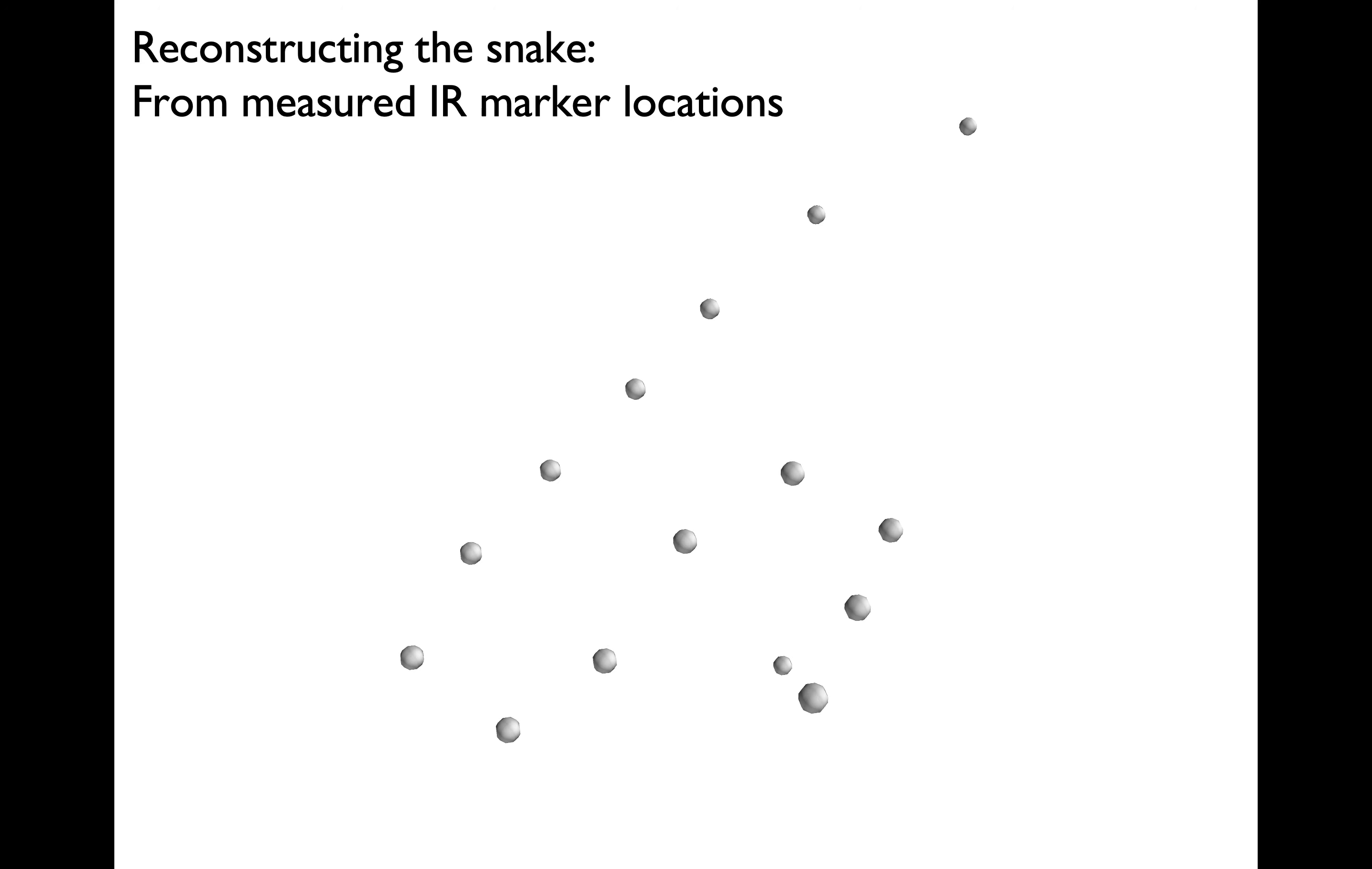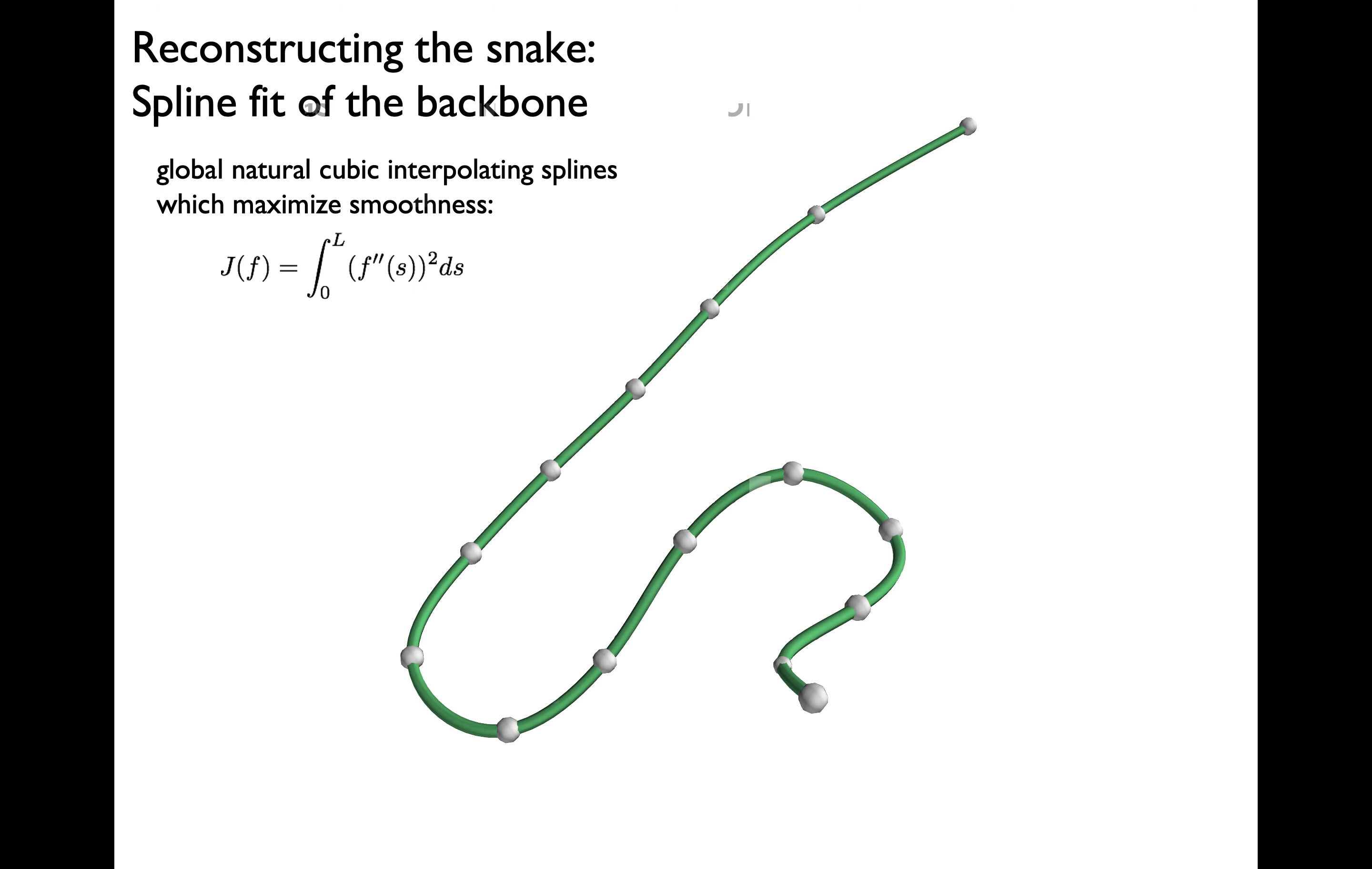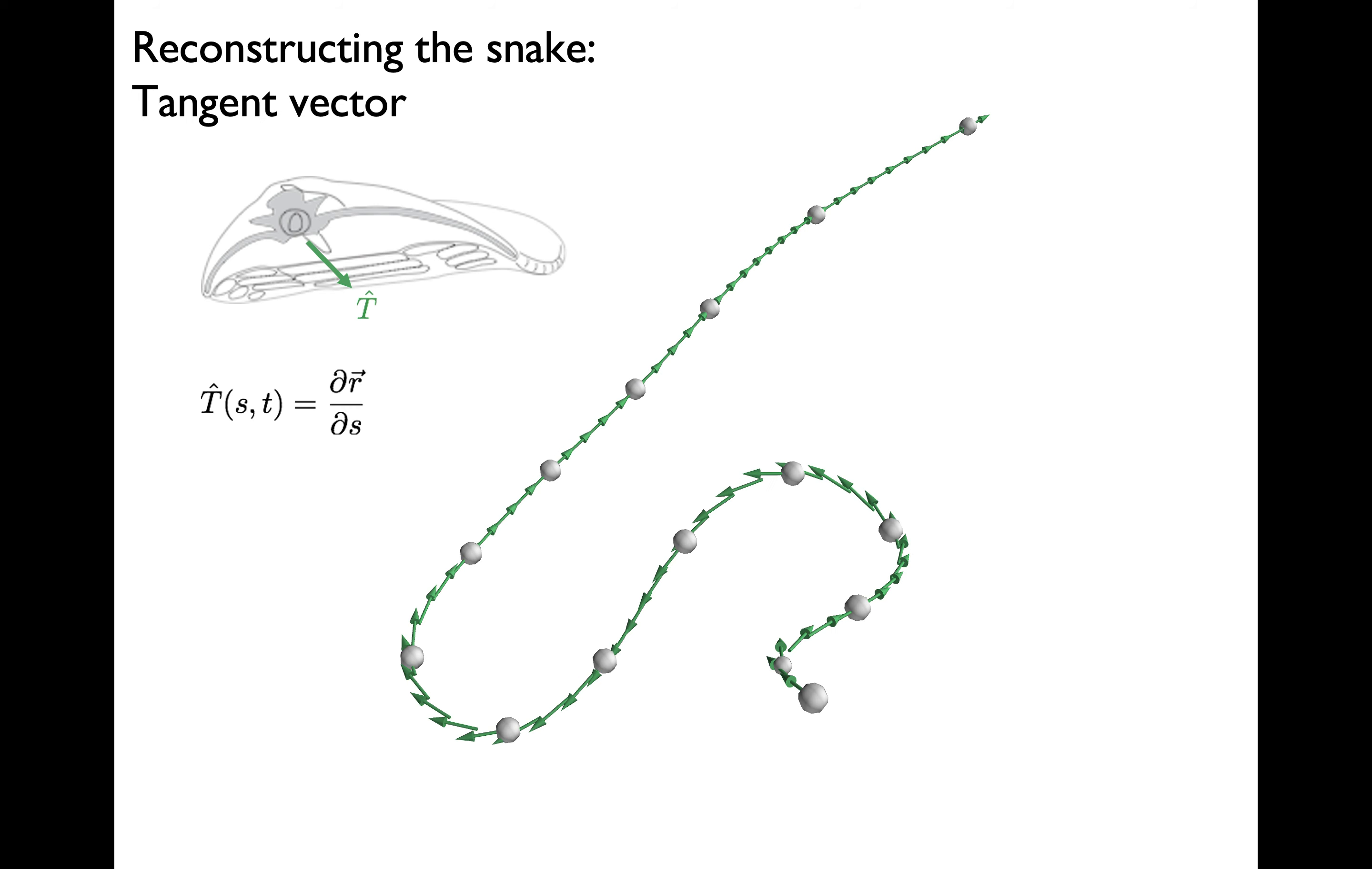From these infrared marker locations, we can reconstruct the snake's morphing wing body. The first thing we do is fit a spline to the snake's body, providing a continuous representation of the backbone of the snake. From the spline, we extract a tangent vector. This is a unit vector that is locally tangent to the body and points down from the head to the tip of the tail. This vector encodes the information about aerial undulation.